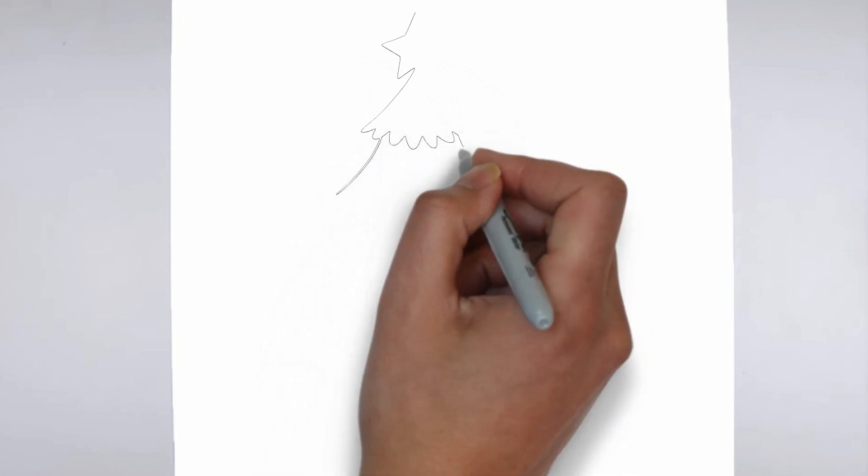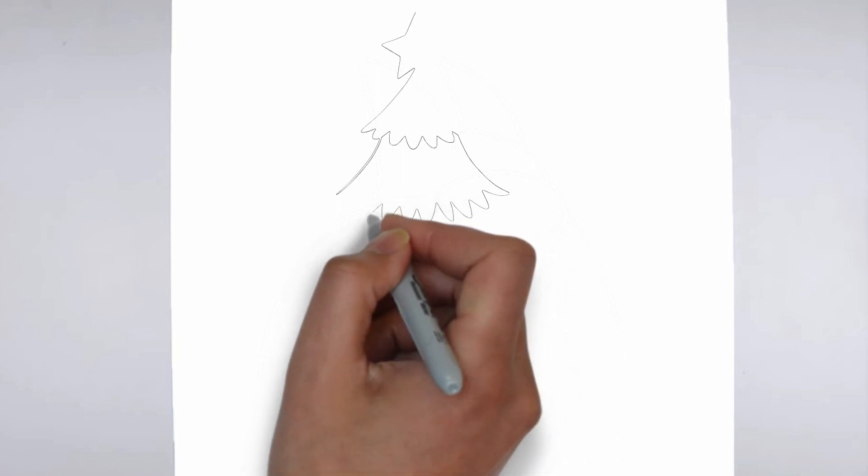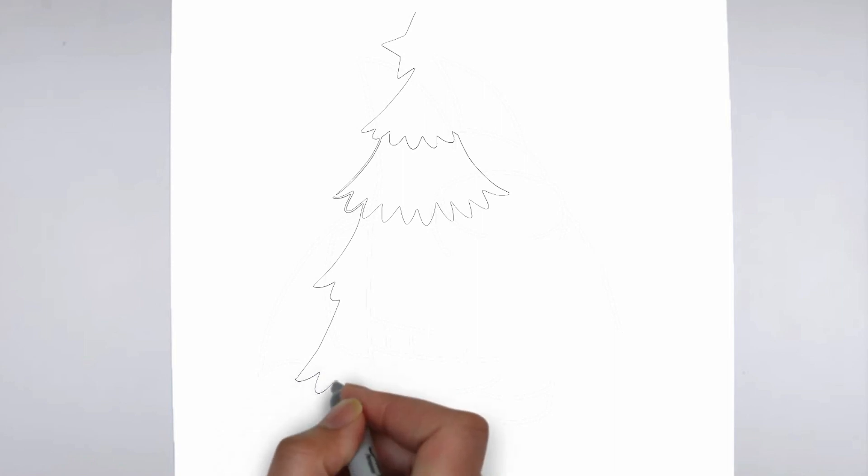First, we'll begin by sketching the basic shape of our subject. Make light, loose strokes to establish the overall form and proportion. Don't worry about details at this stage, just focus on getting the basic shape right.